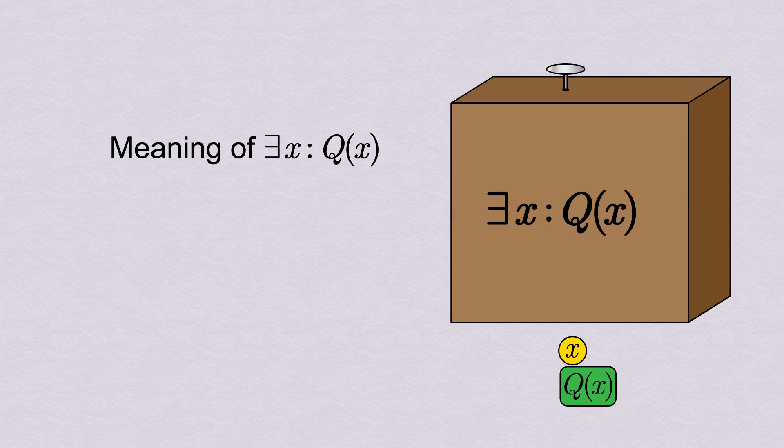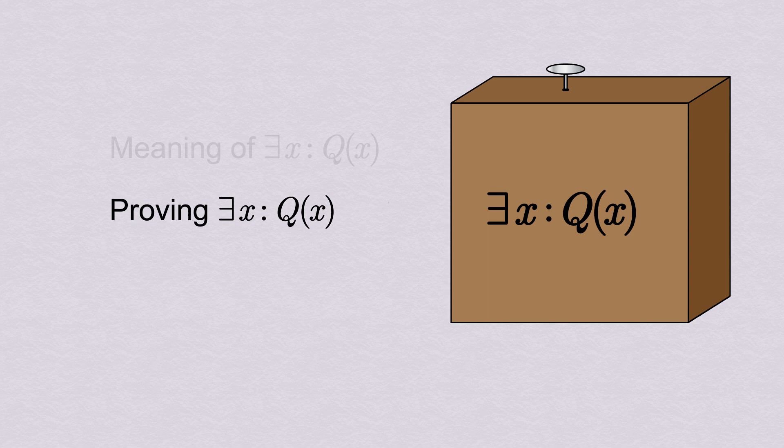The way that we prove such a statement puts into words what we did earlier with our set of shapes. To prove that there existed a hexagon, we needed to find one and verify that indeed it was a hexagon.